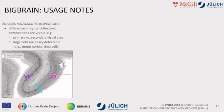Because of this high resolution we can look at differences in cytoarchitectonic composition. Here's an example from the visual cortex — you can see differences in the layer structure between V1 and V2, the border between them being quite visible. You can also see large black dots which are larger cells, nicely detectable in the motor cortex where the Betz cells connect directly to the spinal cord. They're huge cells, easily spotted in the BigBrain.